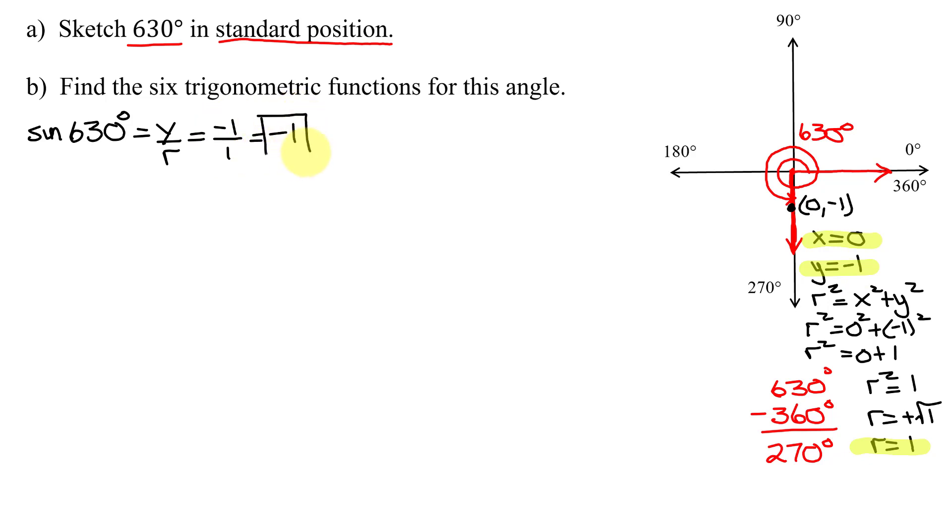Quickly looking at its reciprocal, the cosecant of 630 degrees, that's going to be the reciprocal of this, which is r over y, which is 1 divided by negative 1, which is negative 1.